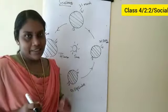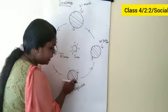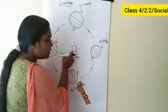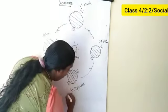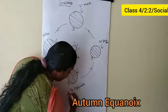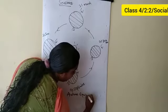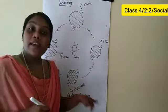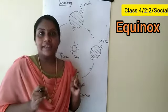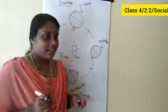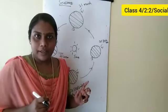Around 23 September, the sun's rays directly fall on the equator. This is called autumn equinox. Equinox means equal lengths of day and night all over the world — day and night are equal.